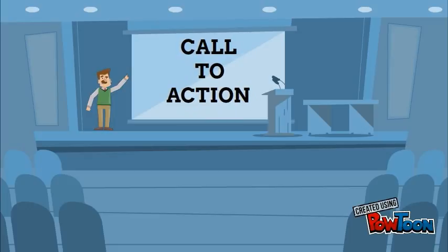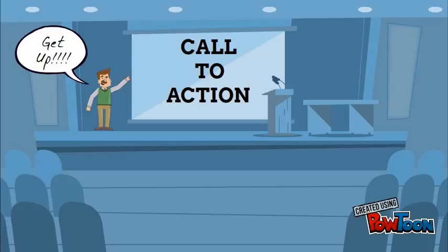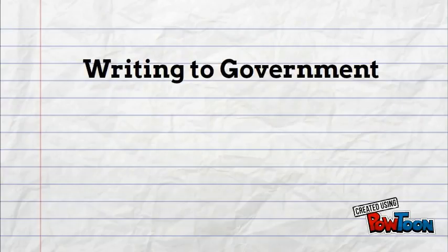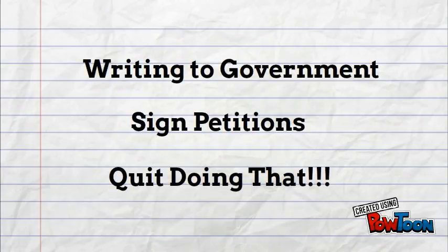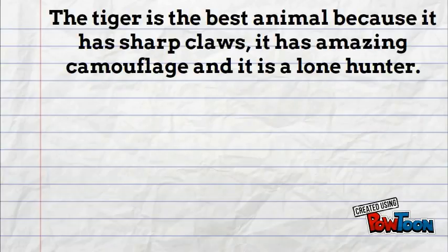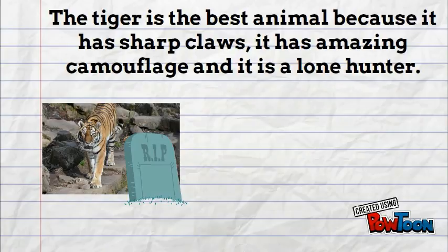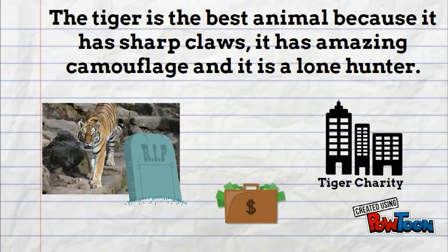In the call to action conclusion, you will be asking your readers to get up and do something about the problem. These are fantastic for argumentative essay writing because it gives validation to your original ideas. It's basically: because of what I have told you, this is what you should do. Writing to legislators, signing petitions, or just asking people to stop what they're doing are excellent ways to call people to action. For example, you take your original thesis and then say something like: these animals are an endangered species due to poaching and deforestation. Please donate to your local tiger charity to help these animals.